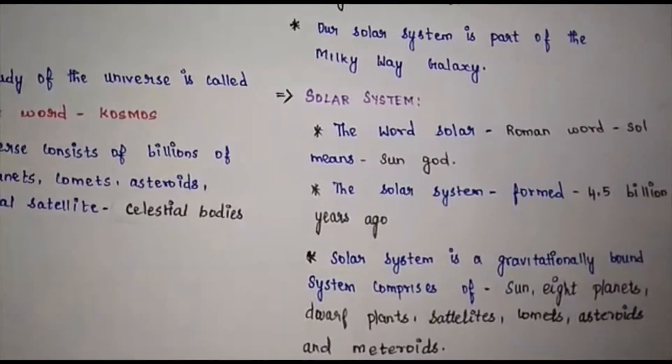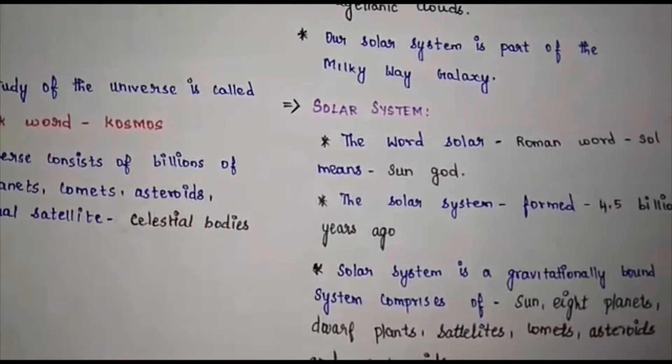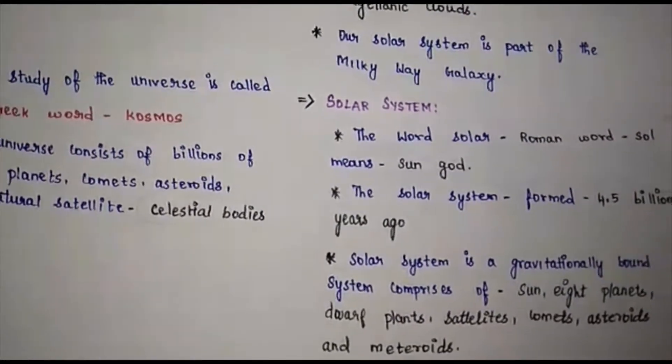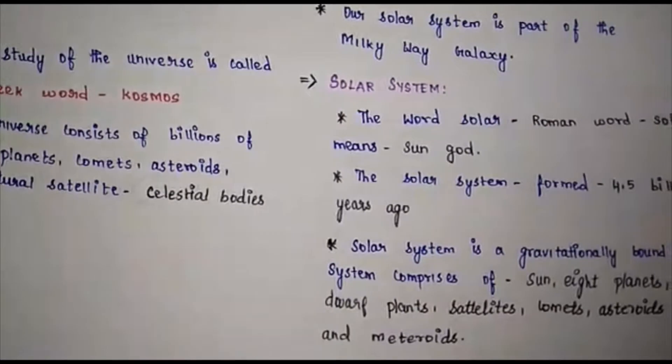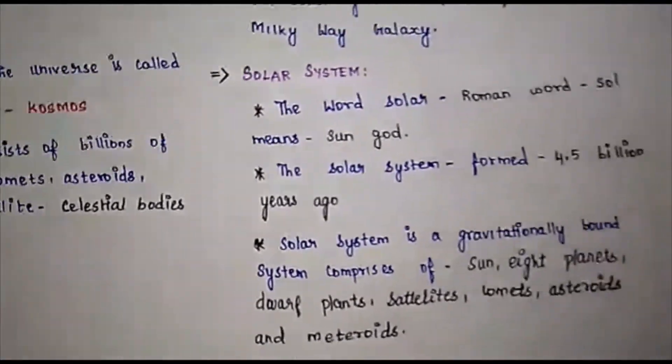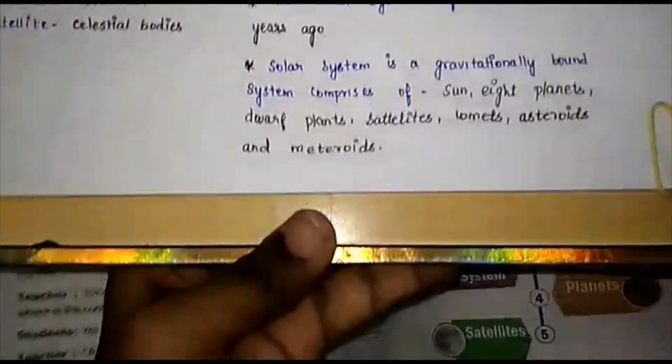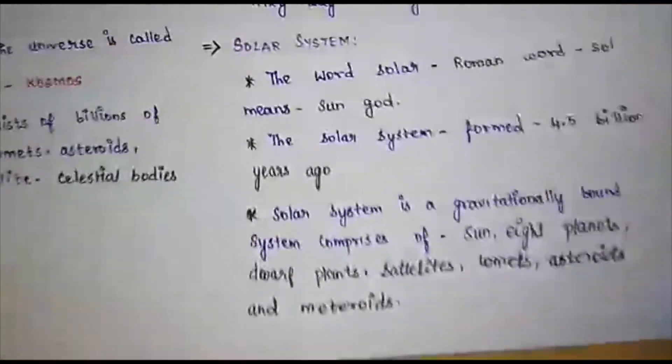The solar system is a gravitationally bound system which comprises of the sun, the eight planets, dwarf planets, satellites, comets, asteroids and meteoroids. In the solar system, there are eight planets.